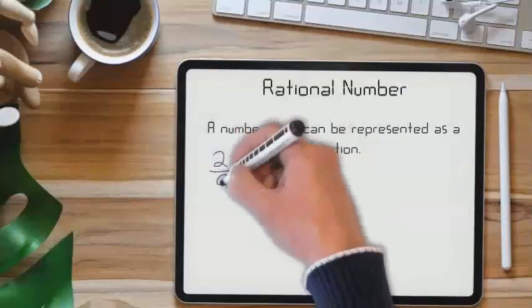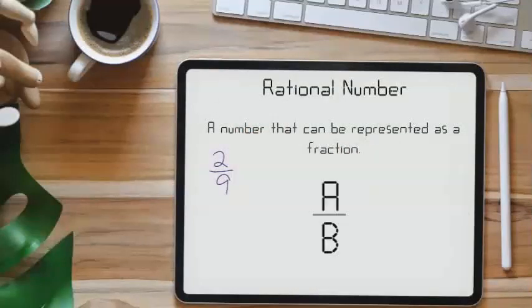Some examples include 2 ninths, 4 since it can be written as 4 over 1, negative 3.1, and square root of 25 since it's equal to 5.